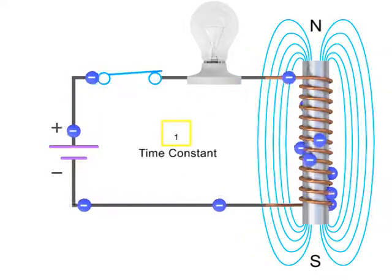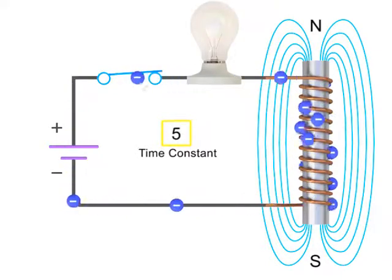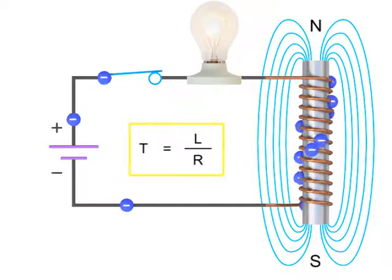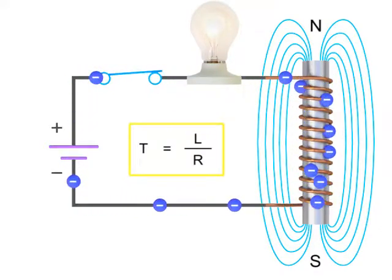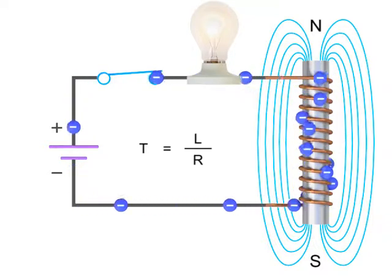The current will continue to flow and reach its maximum value after 5 time constants, or 5T, where T is equal to L divided by R. The light bulb will then be at its maximum brightness.